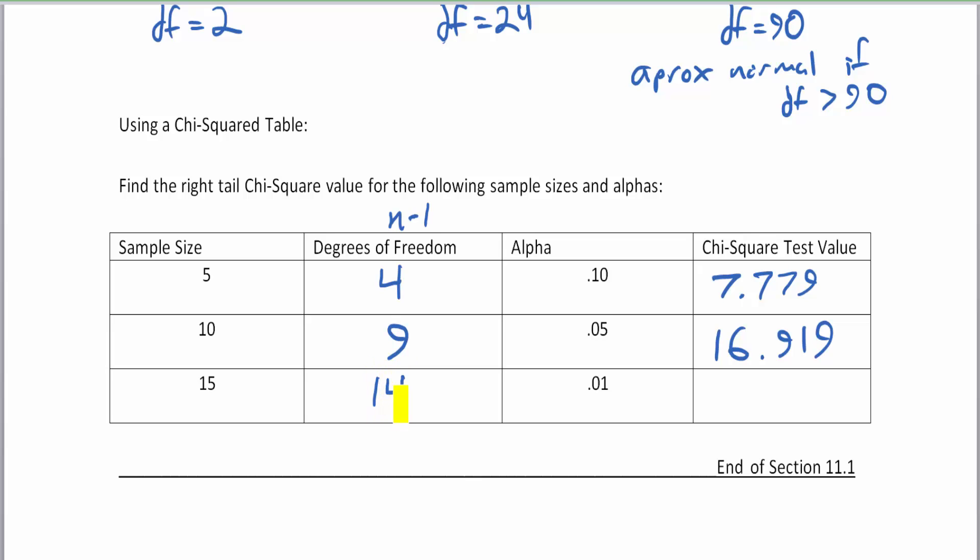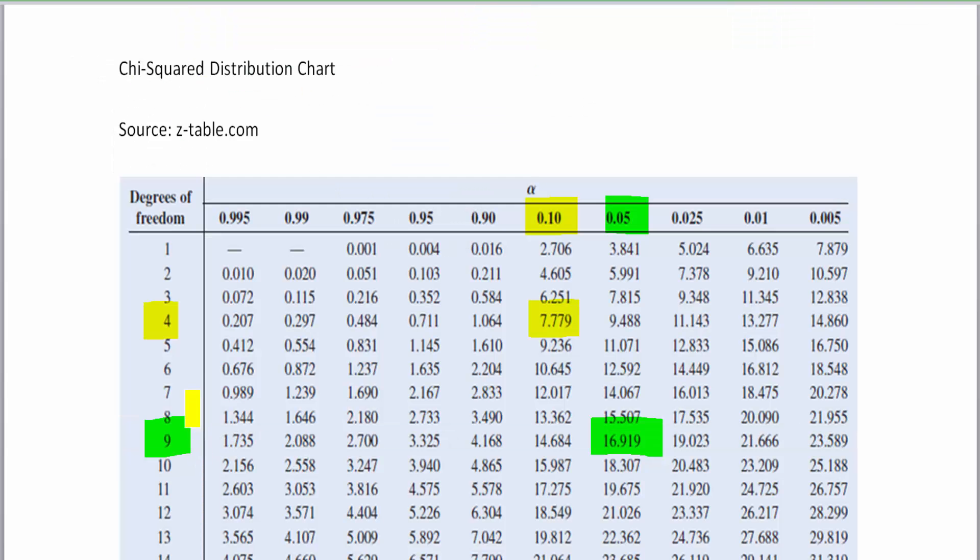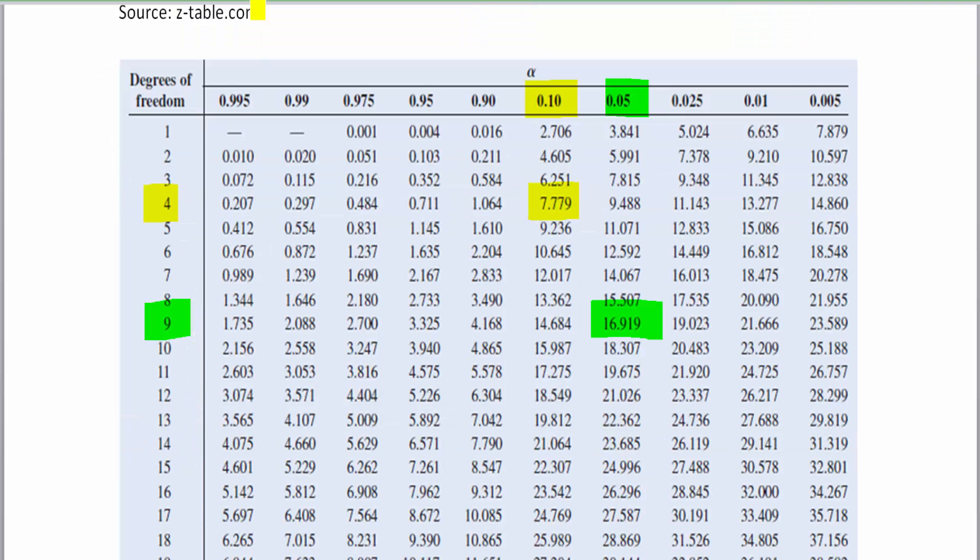The degrees of freedom here is 14. If we look up 0.01 or 1 percent alpha on the next chart, let's take a look. So 14 degrees of freedom because we had a sample size of 15 and 1 percent alpha up here. That gives us a test value of 29.141.